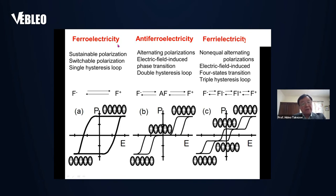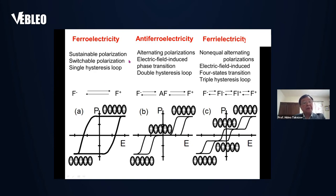Ferroelectric material has uniformly aligned polarization, and there are two necessary conditions: sustainable polarization and switchable polarization. This single hysteresis loop is a manifestation of these two properties — polarization appears in zero field, and positive and negative polarization can be switched by applying positive and negative electric fields. Antiferroelectric material shows alternating polarizations, and by applying a field, the uniformly aligned ferroelectric state appears, giving a double hysteresis loop.